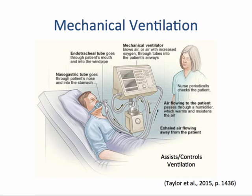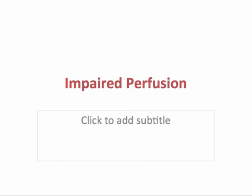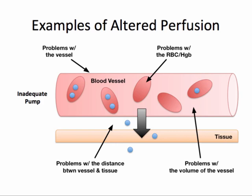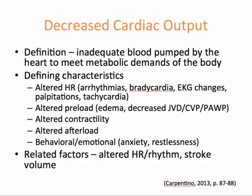The third and final problem is impaired perfusion. The primary function of the cardiovascular system is perfusion, involving the movement of blood into and out of the capillary beds of the lungs to body organs and tissues. Examples of altered perfusion include inadequate pumping from the heart, problems with the vessel, problems with the red blood cell or hemoglobin, problems with the distance between the vessel and the tissue, and problems with the volume in the vessel. The nursing diagnosis decreased cardiac output is defined as inadequate blood pumped by the heart to meet metabolic demands of the body. Defining characteristics include altered heart rate, altered preload (the volume that fills the heart), altered contractility (the pumping action of the heart), altered afterload (related to constriction of the vessels), and behavioral or emotional factors.